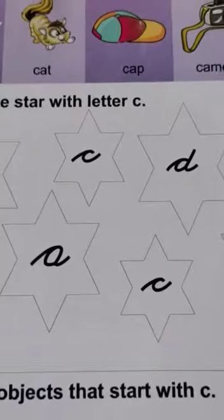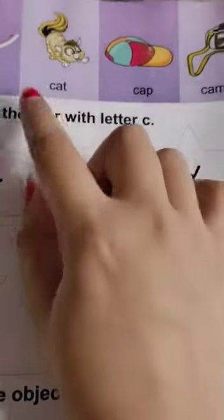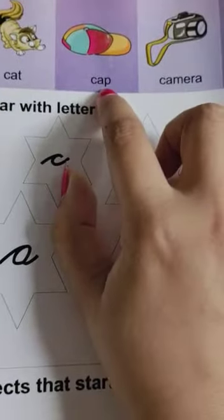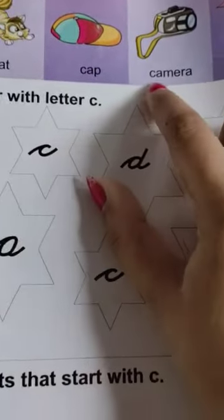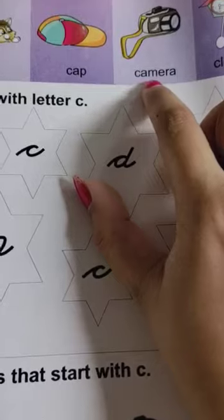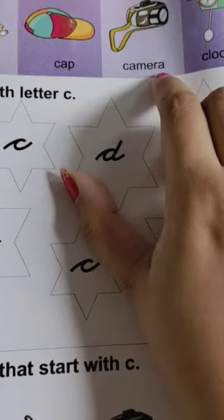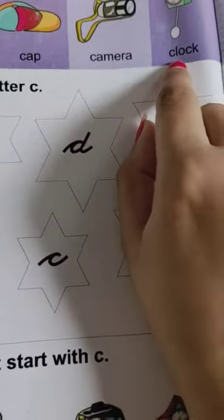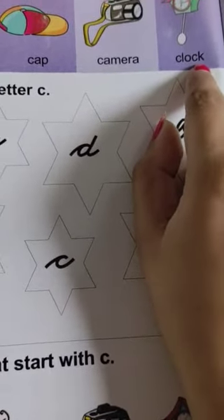Okay? Now, with the help of parents, you have to read it. That is C-A-T, cat. C-A-P, cap. C-A-M-E-R-A, camera. C-L-O-C-K, clock. Okay?